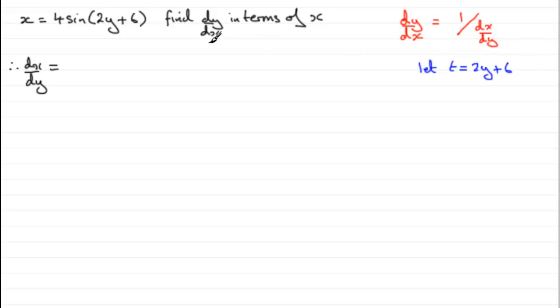We let t equal to 2y plus 6. And that means that we can now say that x equals 4 sine of t. So therefore x equals 4 sine of t.